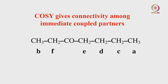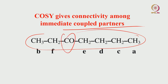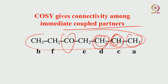What does COSY give? It gives connectivity among immediate coupled partners. It can also show long-range interactions, but the immediate coupled partner can be seen directly. For example, if I have a chain molecule — broken somewhere — COSY tells me which CH3 is sitting next to which CH2, and which CH2 is sitting next to which groups. The connectivity pattern among immediate coupled partners can be read easily, and the interpretation of a 2D COSY spectrum is pretty simple.